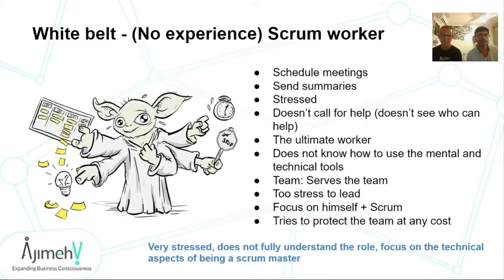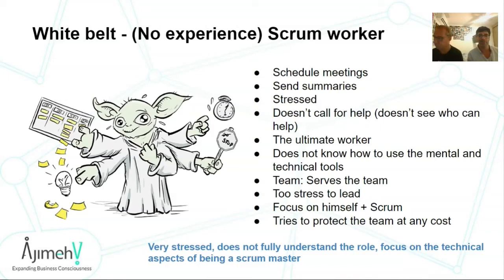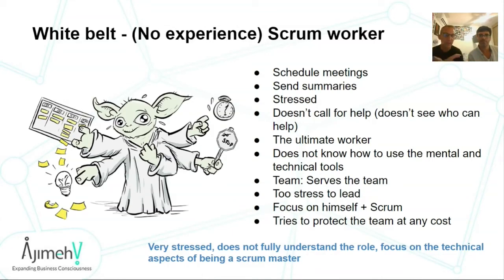At the white belt level, it's like learning to give a punch — at beginner level, you're not aware of your whole body but very focused on your hand going out. Everything at white belt is very technical: running the sprint, running the planning, following advisors and things taught online, strictly following the rules in retrospectives. This Scrum Master is very focused on technical Scrum and how to implement it — a rookie who's nervous, scheduling meetings, sending summaries, and very stressed.